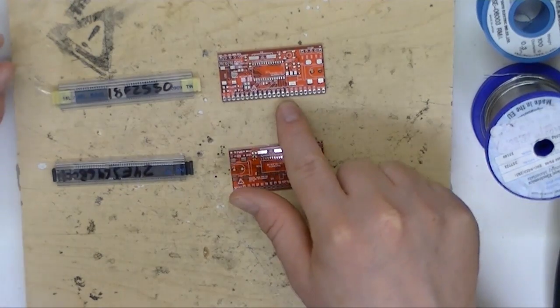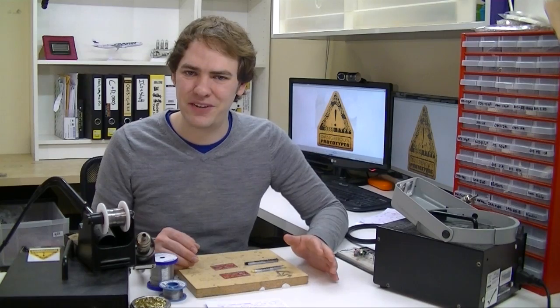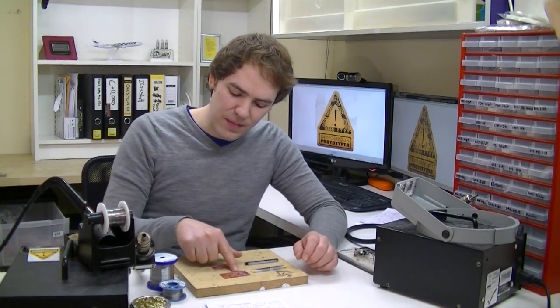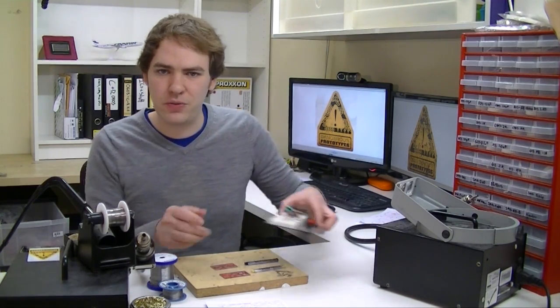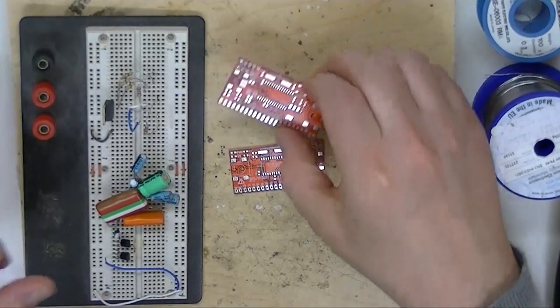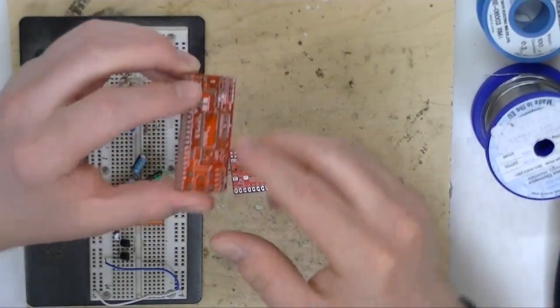Both breakouts use what we're calling a knife or blade pin configuration. That means all of the pins come out on one edge of the breakout board. That makes it a lot easier to use with a breadboard for prototypes. Many of our breakouts have pins on both sides.